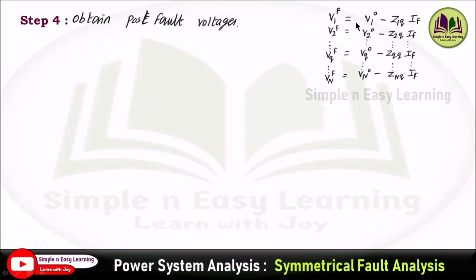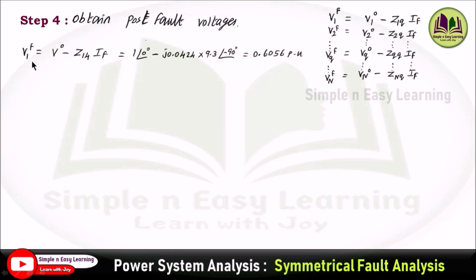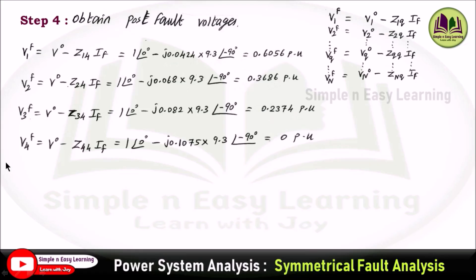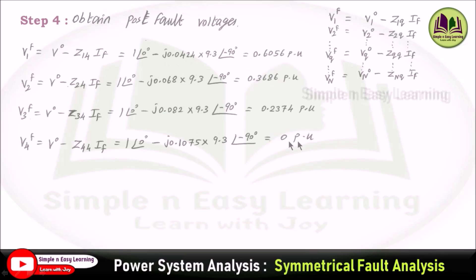Step 4: obtain the post-fault voltages using: V_i(f) = V_i(0) − Z_{iq} × If, where V_i(0) are pre-fault voltages assumed as 1∠0° and q = 4. Substituting values from the Z-bus matrix: V1(f) = 0.6056 per unit, V2(f) = 0.3686 per unit, V3(f) = 0.2374 per unit, V4(f) = 0 per unit.